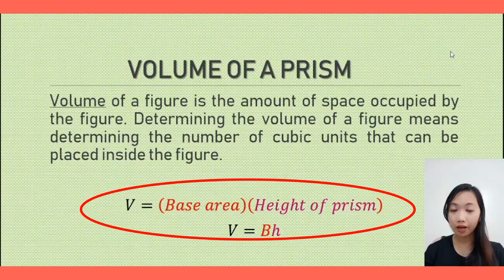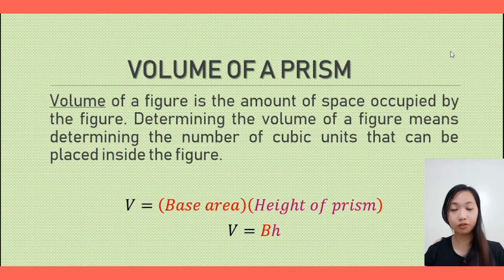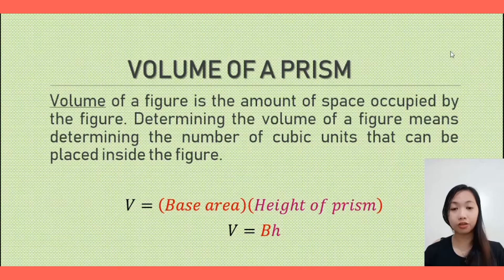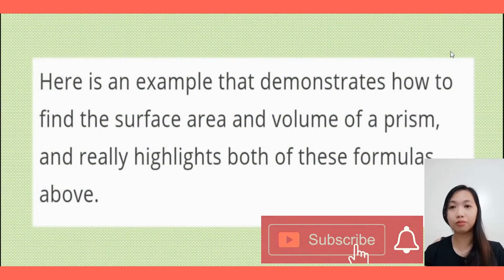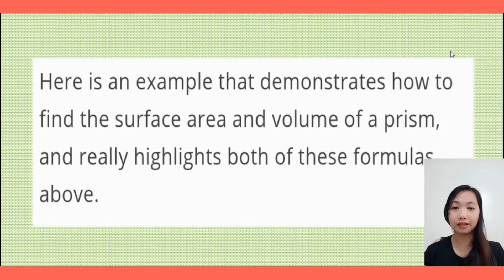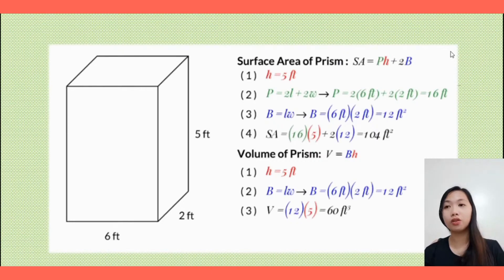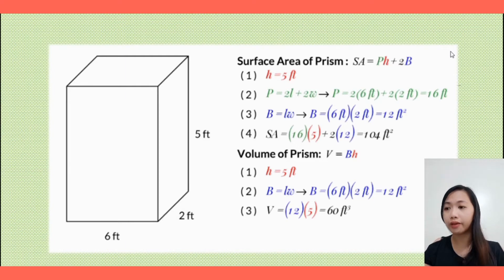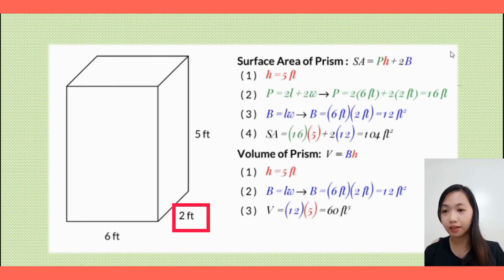So those are the formulas for the area and volume of a prism. Now let's proceed with an example to apply the formulas. Here is an example that demonstrates how to find the surface area and volume of a prism. Let's start with the surface area. From the figure, the given dimensions are 6 feet for the length, 2 feet for the width, and 5 feet for the height.